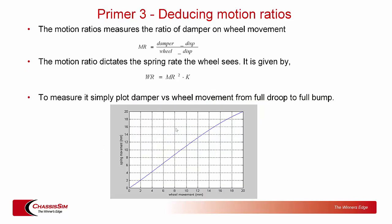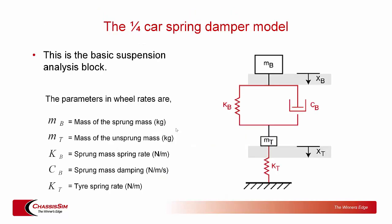Regarding motion ratios — I cannot stress this enough. Get this wrong and you might as well pack up and go home. To quote Mr. Miyagi from The Karate Kid: balance good, get out there; balance bad, better pack up and go home. Motion ratios are the exact analog of this. Wheel rate equals motion ratio squared times the spring rate at the wheel. Don't leave home without this. All you've got to do is plot damper versus wheel displacement from full droop to full bump — it's that simple.